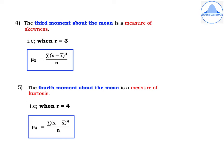Similarly, the third moment about the mean gives us a measure of skewness, which is the next topic I am going to discuss. Put r = 3: μ3 = Σ(x − x̄)^3 / n.